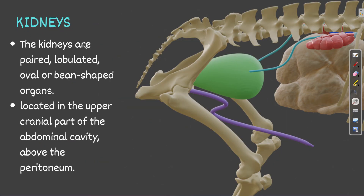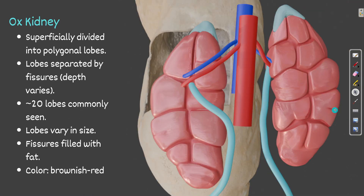Kidneys are paired, lobulated, oval or bean-shaped organs. They are paired — left and right kidney — and lobulated, meaning lobes are present. They are located in the upper cranial part of the abdominal cavity, above the peritoneum. The peritoneum is found below, and the kidneys are present above the peritoneum — they are retroperitoneal.